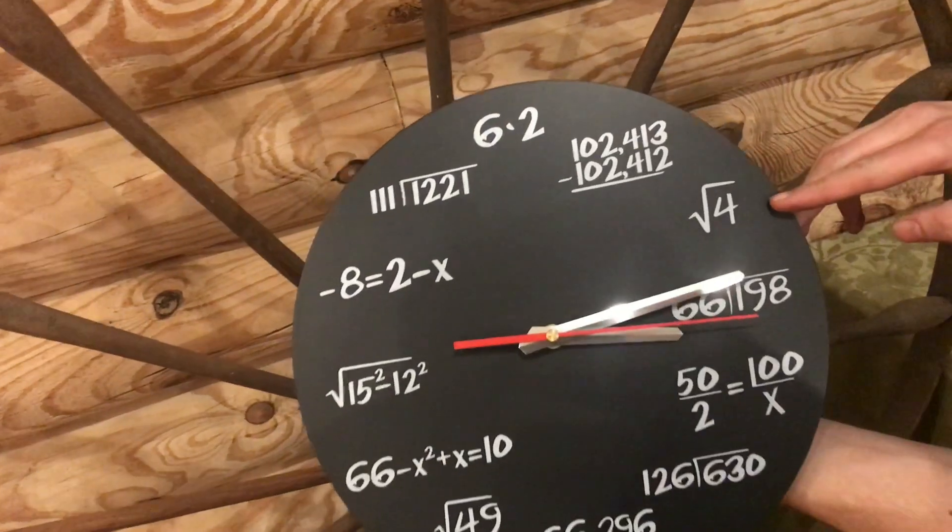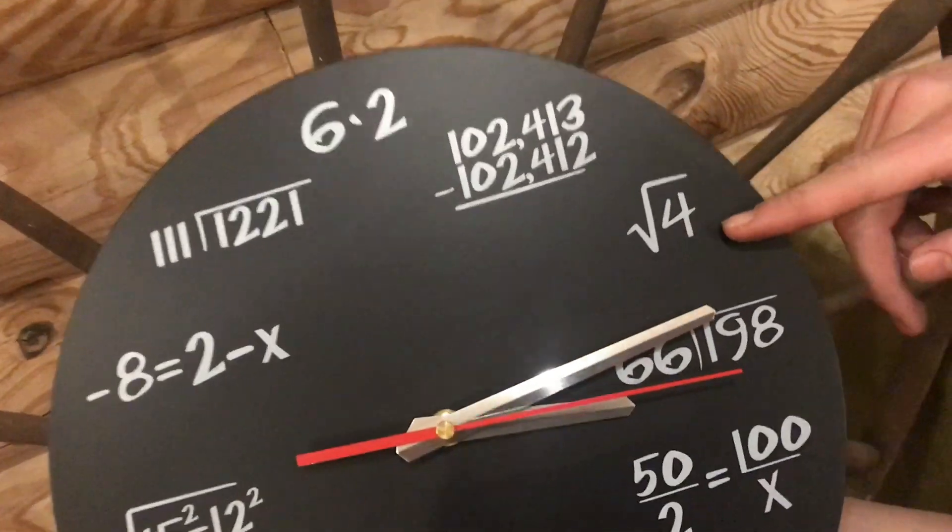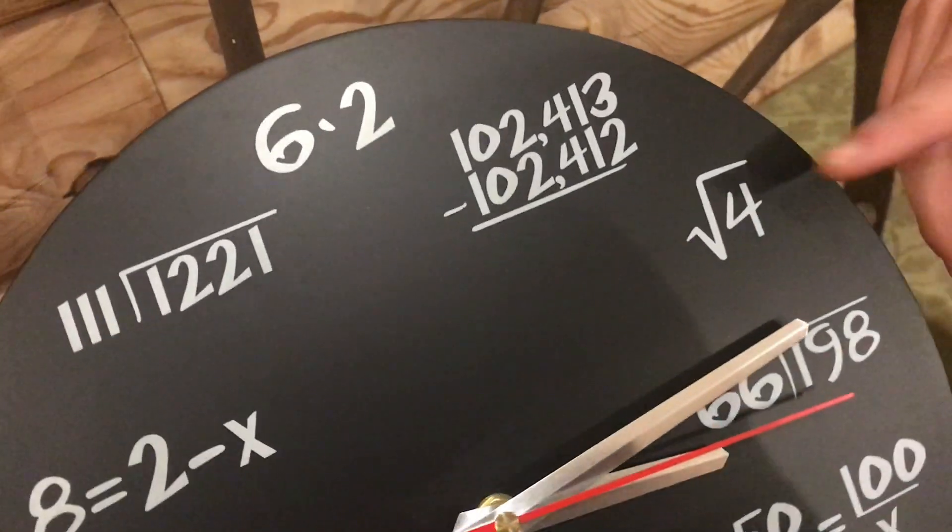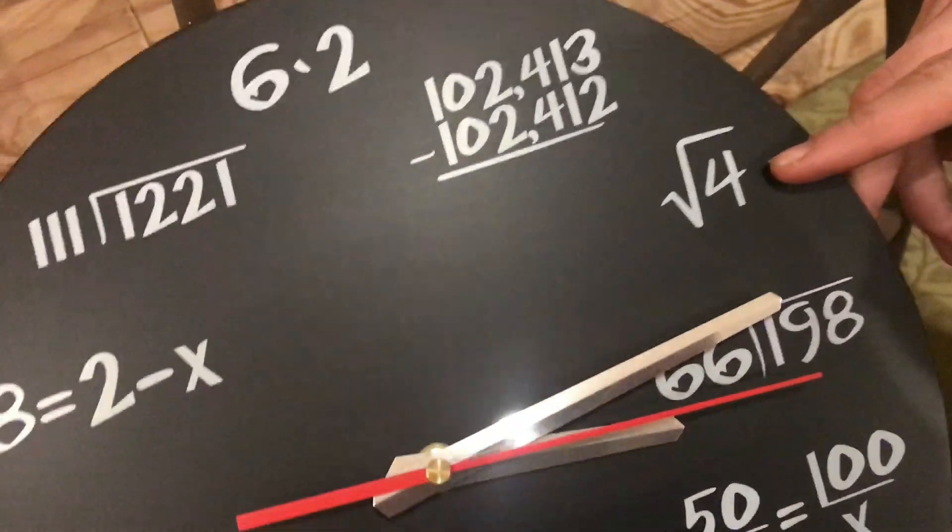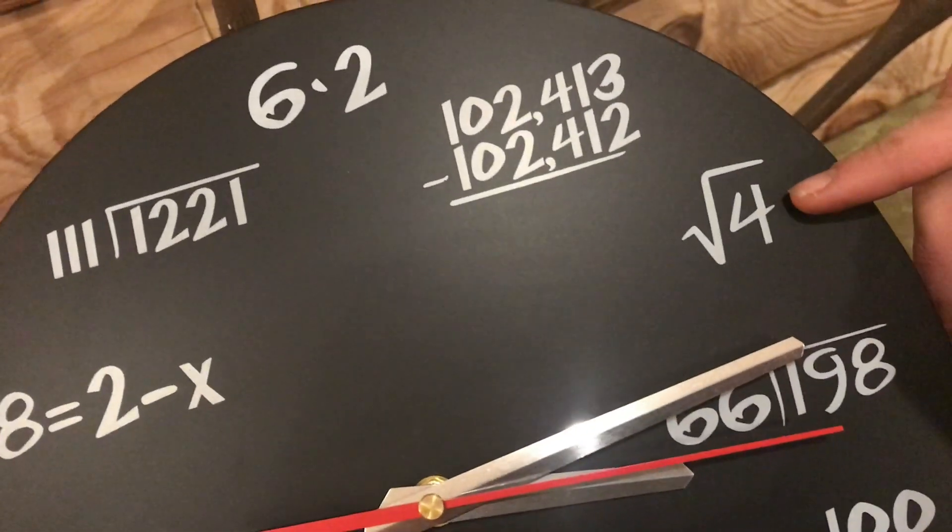This would be the square root of 4, that means what two numbers multiplied together will give you 4, and the answer would be 2, because 2 times 2 equals 4.